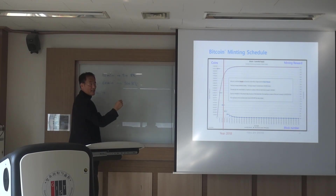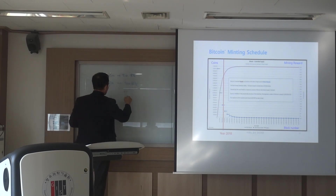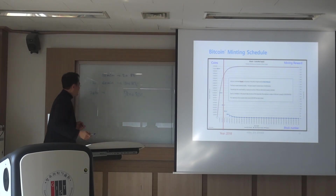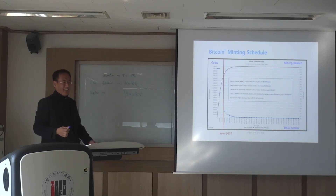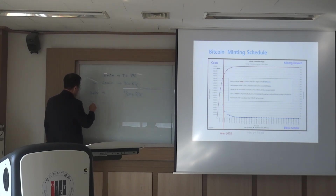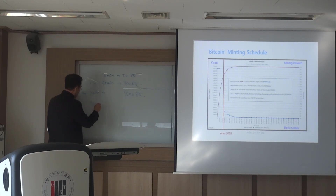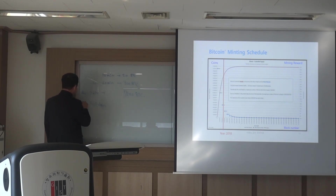7,200. So 24 times 300 is 7,200. And then what happens in a year? This is a day, right? 365 days — this is a year.